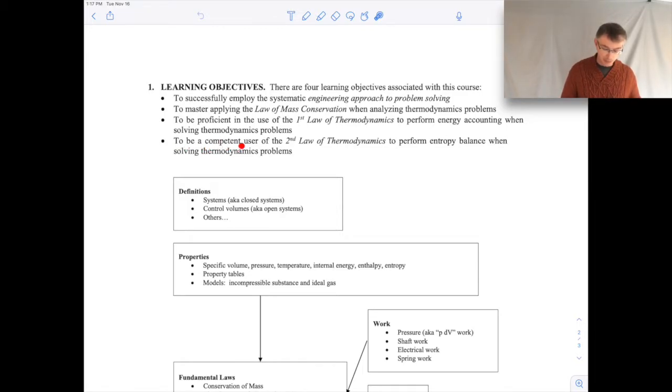And then the last item here, number four, to be a competent user of the second law of thermodynamics to perform entropy balance, solving thermodynamics problems. This is making use of the entropy equation that we've talked about. How do we use the entropy equation to show that a process is possible? How do we use it to calculate entropy generation so we can compare which processes are more advantageous thermodynamically speaking? And we've also used it to define efficiencies, like the isentropic efficiencies for a turbine, a compressor, or a nozzle, for example. So I think we've accomplished all of our learning objectives. That's what we set out to do. And if you've followed along in the course and have done the homeworks and done reasonably well on the exams and such, then I think that you've done all of these things.